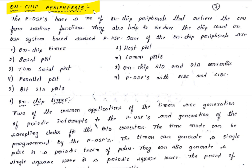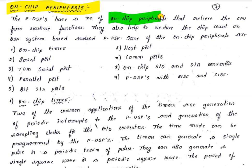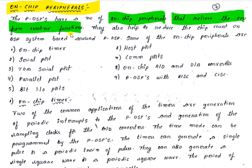You should know the difference between on-chip peripherals of programmable DSPs and on-chip peripherals of the TMS320C56 DSP processor. The main purpose of on-chip peripherals is to relieve the CPU from routine functions, thereby reducing the chip count in a DSP system built around a programmable DSP.